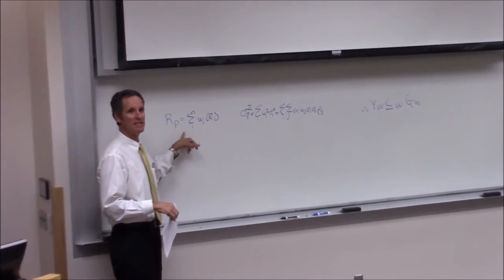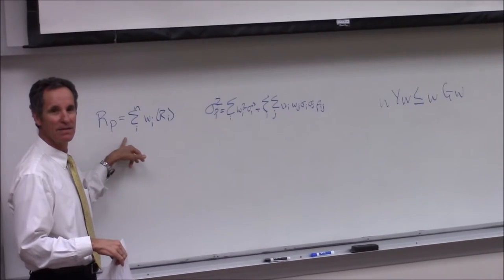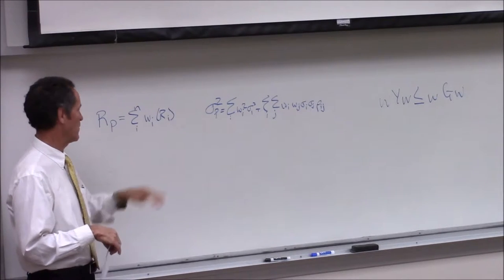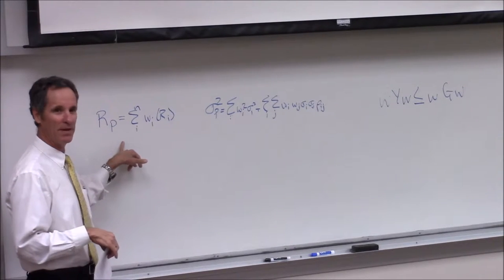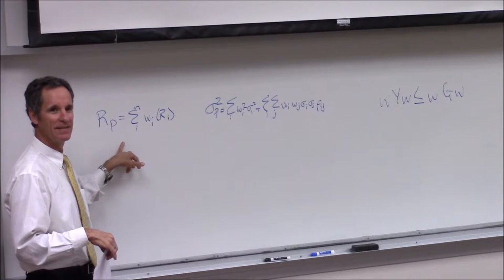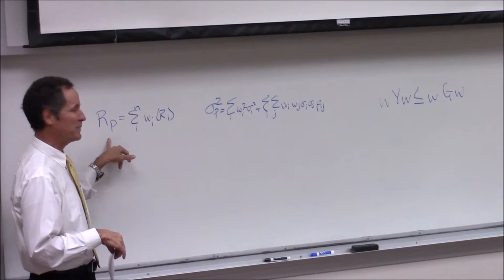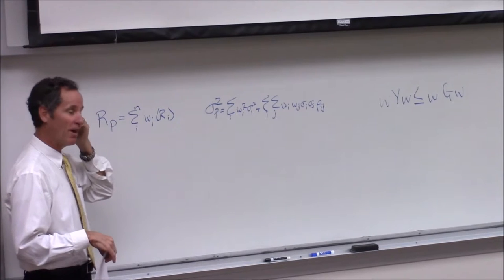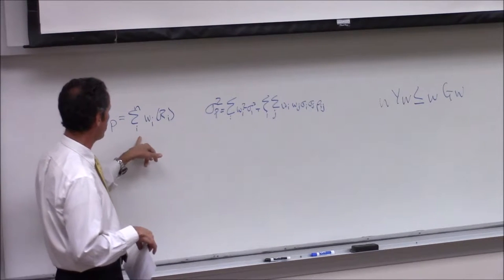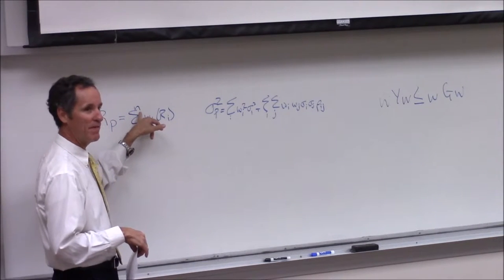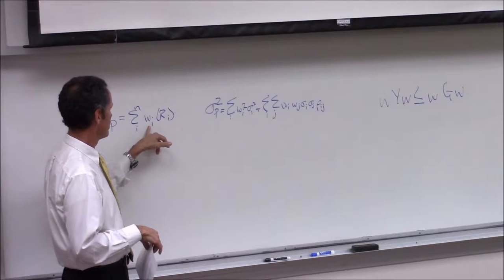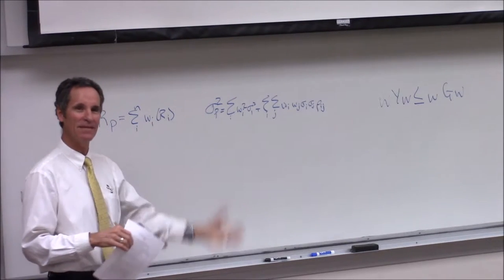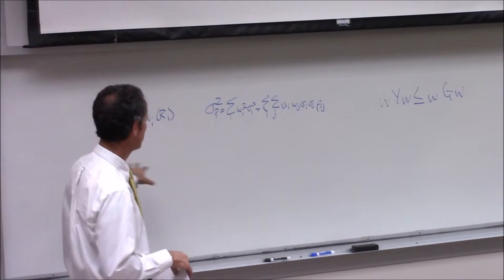We'll actually use it today in class. The good news is we're not going to use that one. So what's this formula? What does it say? What does R sub P stand for? Return on the portfolio. So the return on the portfolio is equal to the sum from I to N, which is the number of assets, times the weight times the return on the asset. Does that make sense? Yeah. So that was easy.